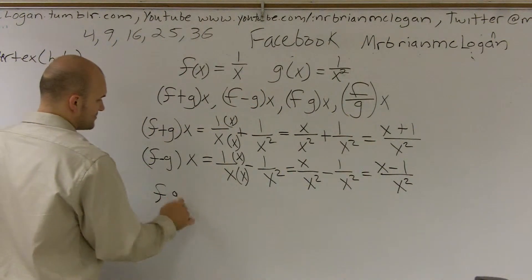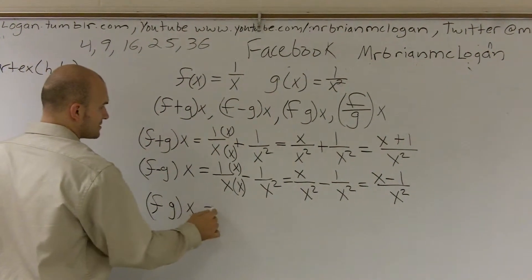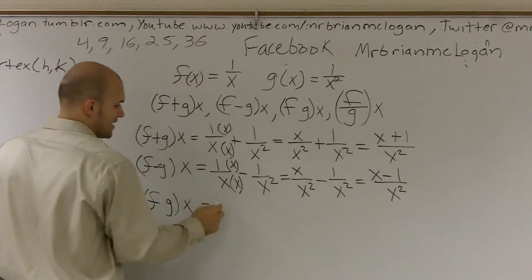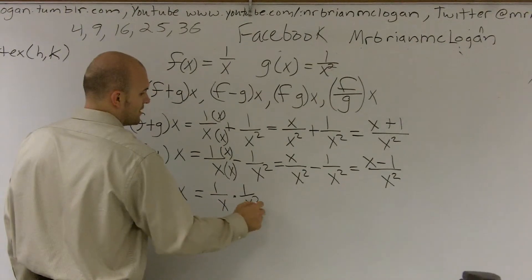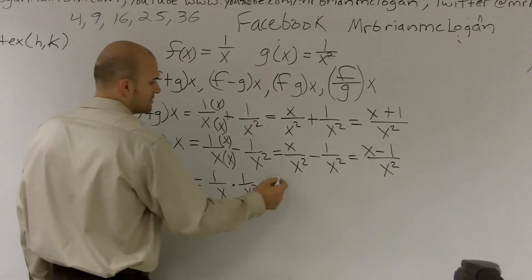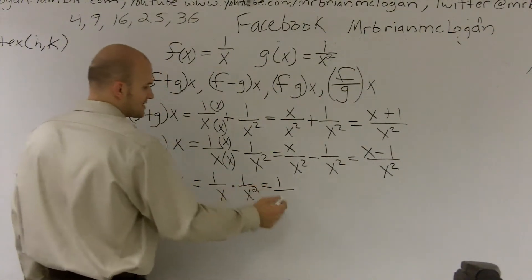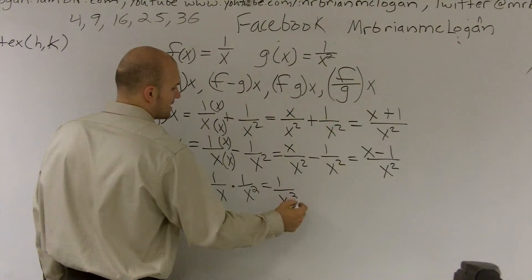To do f times g of x, you're going to just multiply your two fractions. So it would be 1 over x times 1 over x squared. Well, 1 times 1 gives me 1, and x times x squared gives me x cubed.